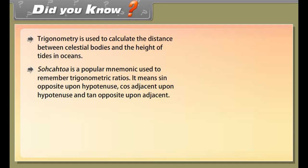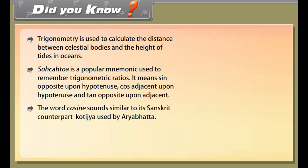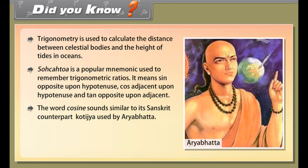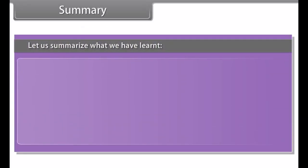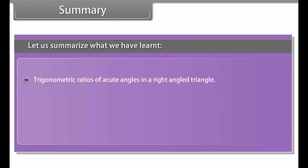Summary. Let us summarize what we have learned: trigonometric ratios of acute angles in a right-angled triangle; trigonometric ratios of specific angles such as 0°, 30°, 45°, 60°, and 90°; and trigonometric ratios of complementary angles.